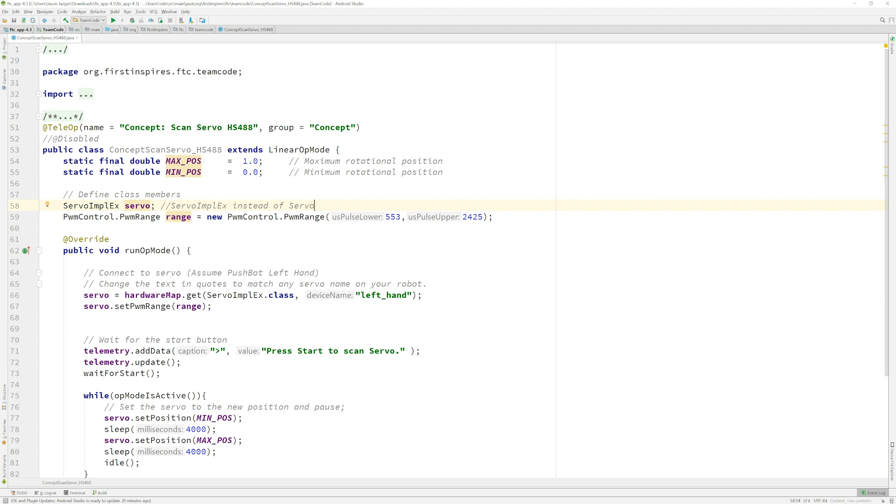So the next line of code is we're just creating a range in the format that it's going to want when we go to assign a PWM range. So we're using the PWM control class to create a PWM range.